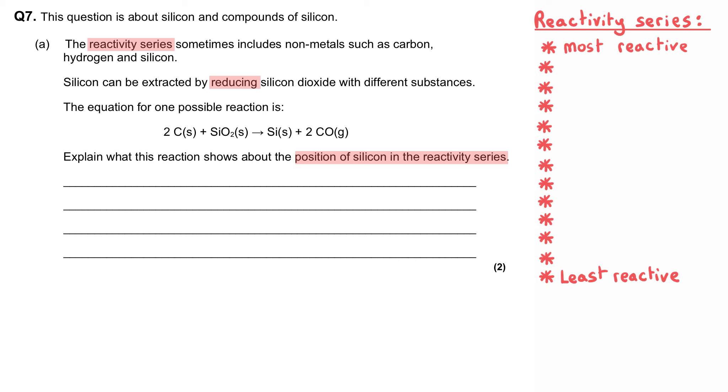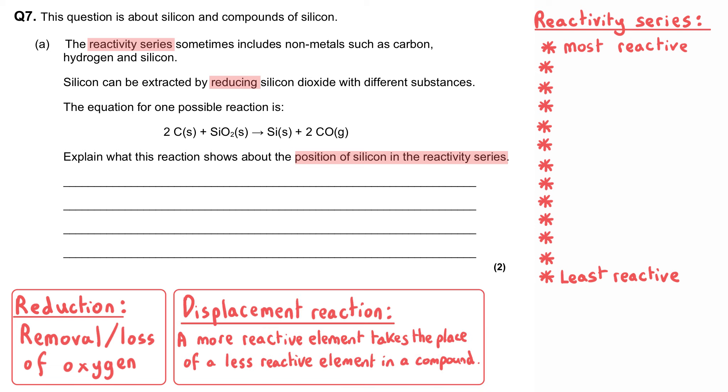And reduction, one of the meanings of a reduction reaction is the removal of oxygen from a compound. And one of the ways that we can carry this out is by a displacement reaction, and that is where a more reactive element takes the place of a less reactive element in a compound.